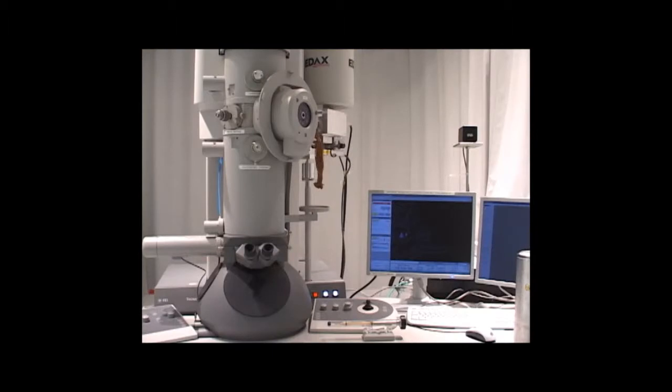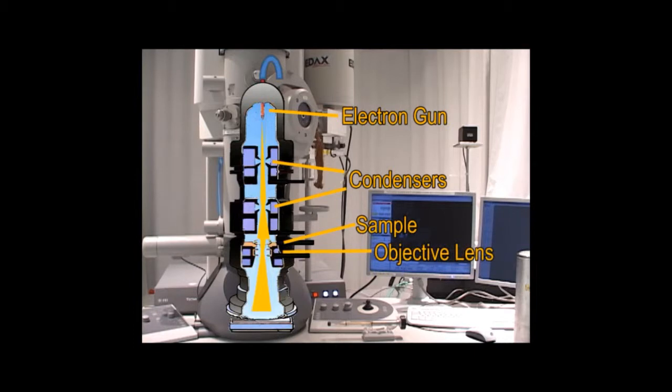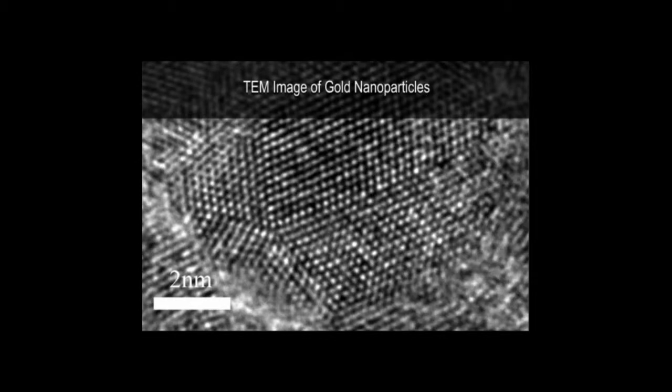In a transmission electron microscope, an electron beam from the electron gun passes through an electromagnetic condenser lens through the sample, through an objective lens, and then down to a phosphor screen or CCD camera. The condenser lens controls the size and intensity of the beam hitting the sample. The objective lens controls the magnification. TEM images show internal structures of specimens with magnification up to 1 million times, revealing structures in atomic resolution.